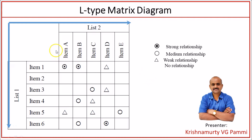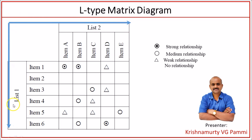In the L-type matrix, we compare items across two dimensions: list 1 on one dimension and list 2 on another. Item 1 to item 6 fall under list 1 on one side of the L, and item A to item E fall under list 2 on the other dimension, forming a reverse L shape. The items of list 1 and list 2 are correlated as part of this L-type matrix diagram.